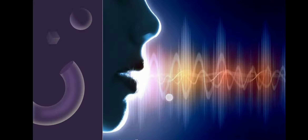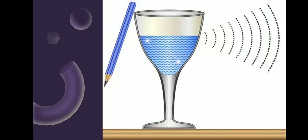You can see here sound traveling in the form of waves. It is produced when a force causes an object or substance to vibrate. You can see here the vibration caused by the movement of sound waves.